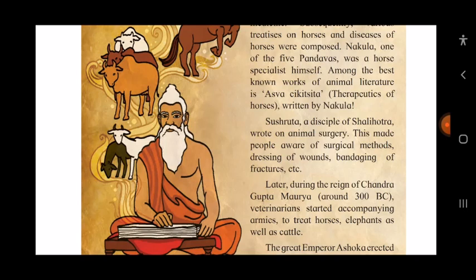Sushruta, a disciple — meaning student — of Shalihotra, wrote on animal surgery. This made people aware of surgical methods. Aware means having knowledge of a fact or situation. Surgery involves dressing of wounds — cleaning wounds, putting medicine, putting bandages — and treating fractures.